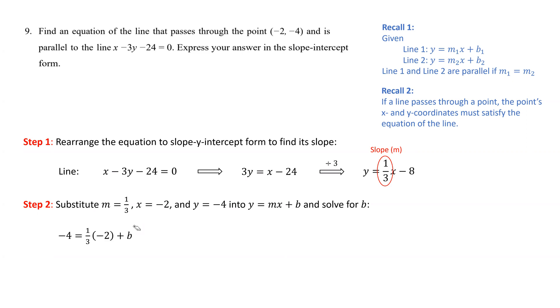So we get negative 4 equals one-third times negative 2 plus b. We multiply negative 2 and one-third to get negative 4 equals negative 2 over 3 plus b.